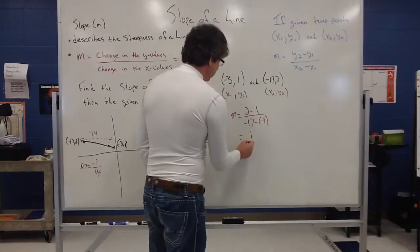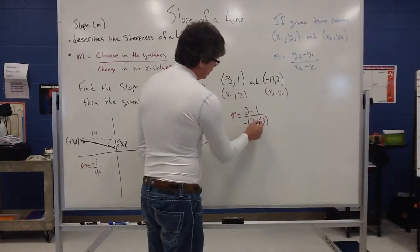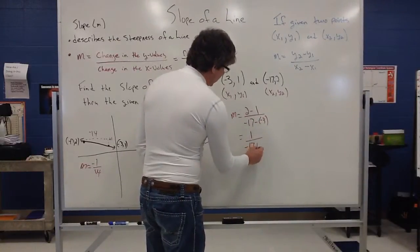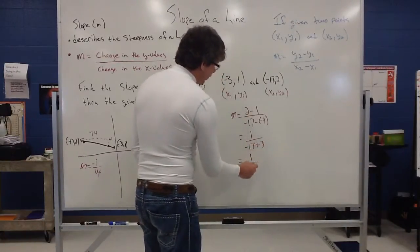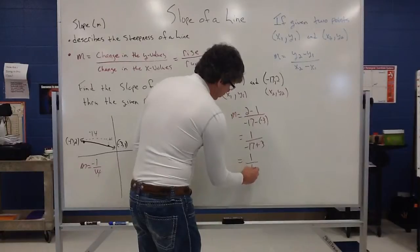Again, 2 minus 1 would be 1. Negative 17 and the opposite of (-3), that's (-17) and 3. So that's going to be 1. And (-17) and 3, that's going to give me (-14).